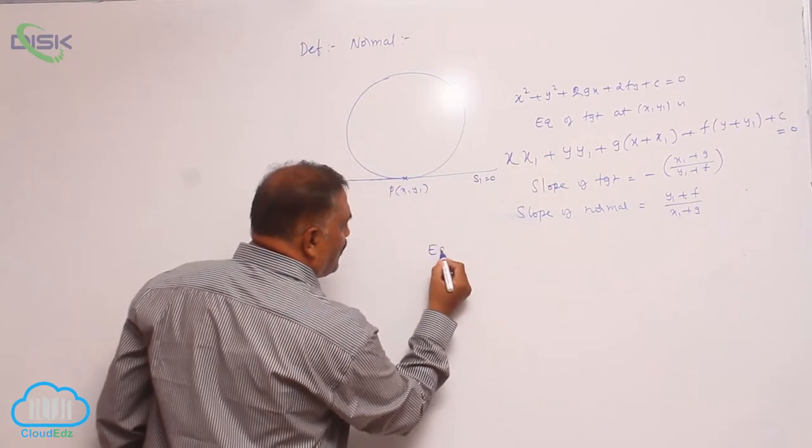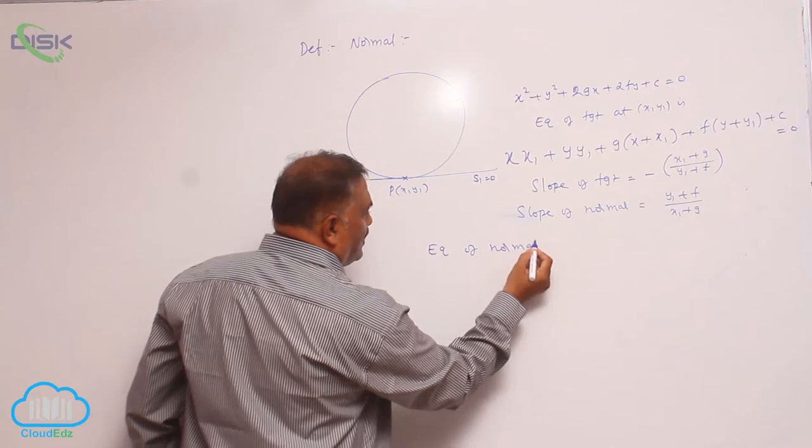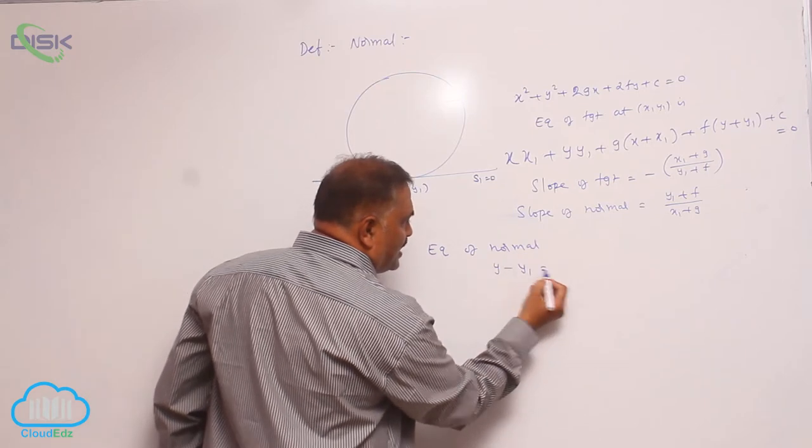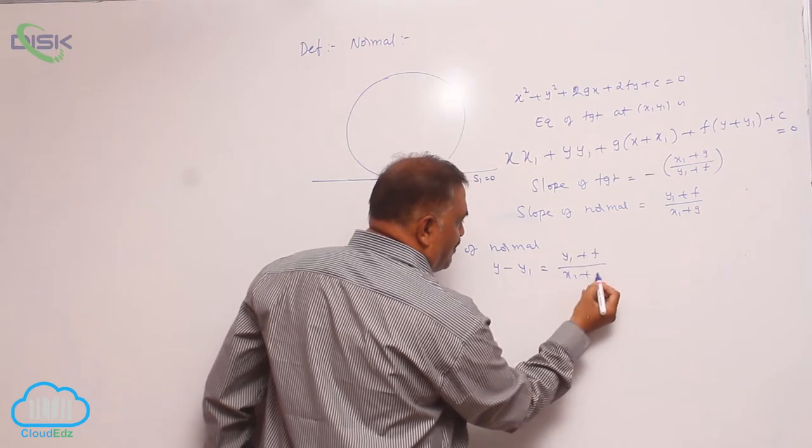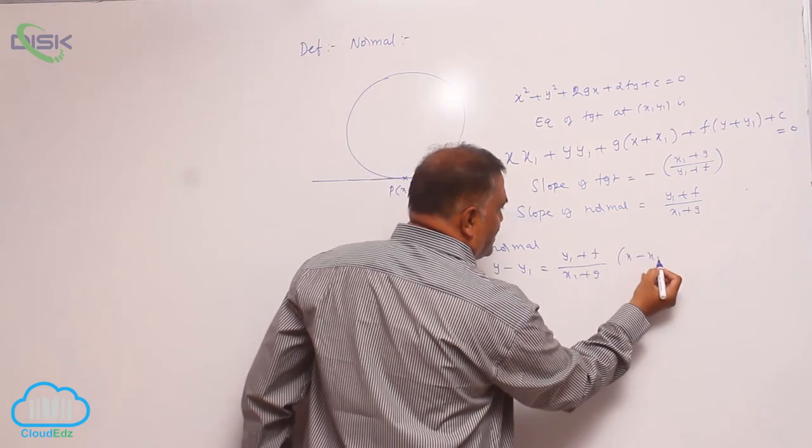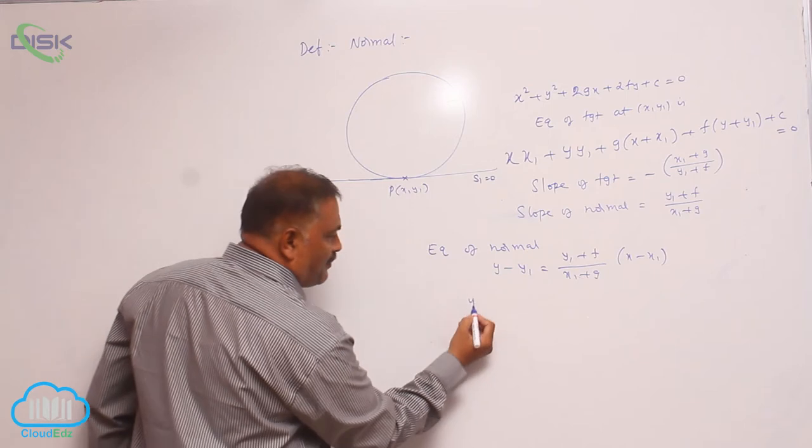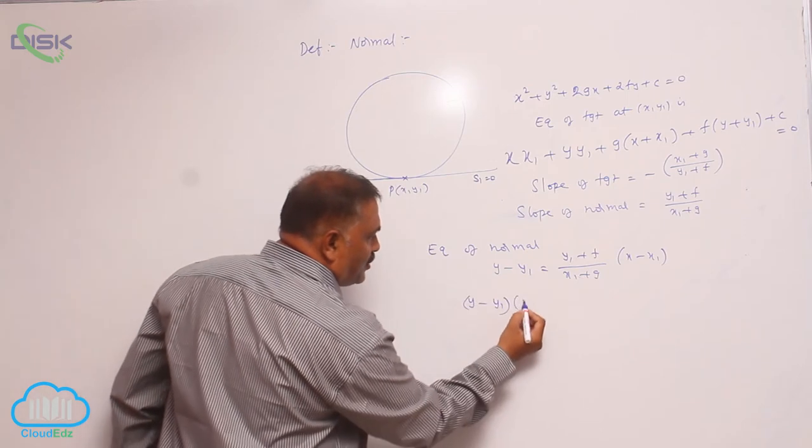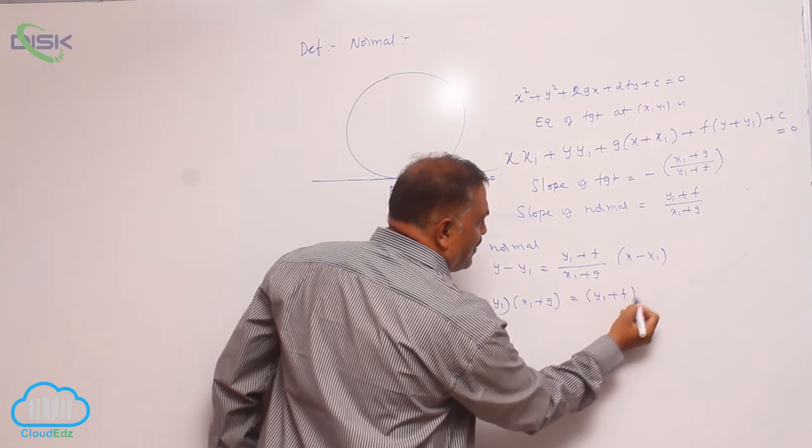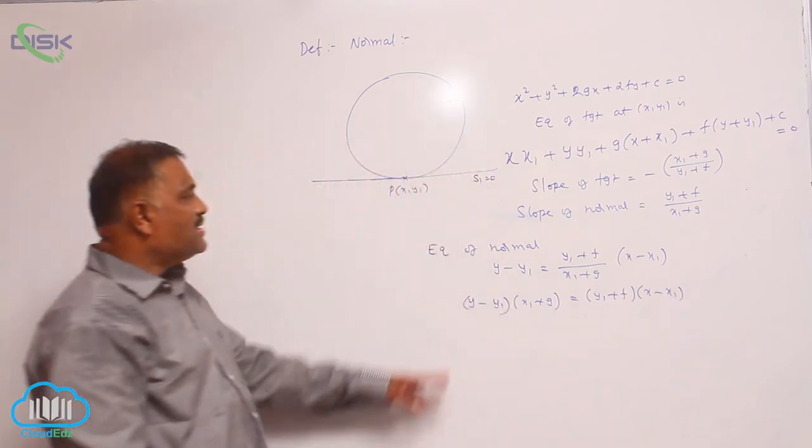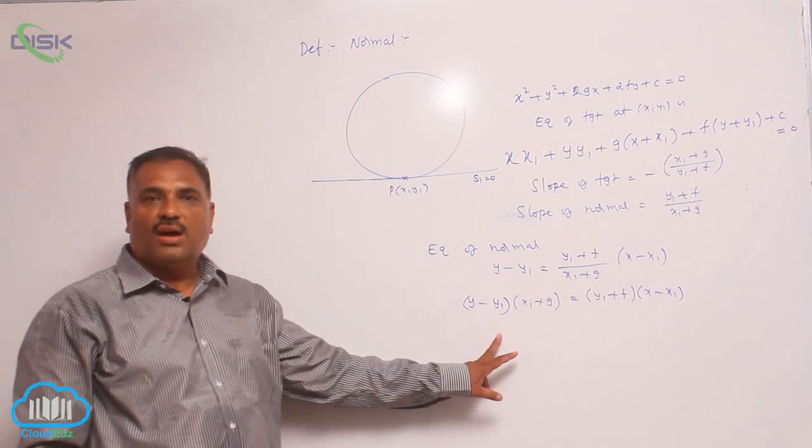How to find the equation of normal? y - y₁ = [(y₁ + f)/(x₁ + g)](x - x₁). By cross multiplication: (y - y₁)(x₁ + g) = (y₁ + f)(x - x₁). This is the equation of normal.